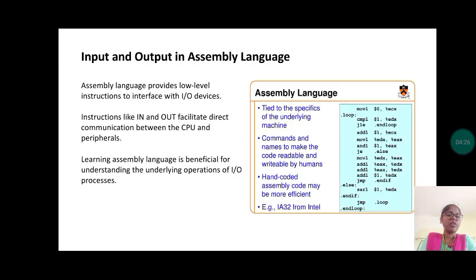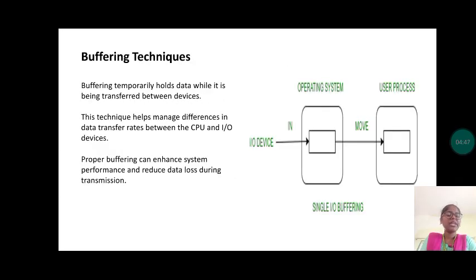Input and output in assembly language. Assembly language provides low-level instructions to interface with input output devices. Instructions like IN and OUT facilitate direct communication between the CPU and peripherals. Learning assembly language is beneficial for understanding the underlying operations of input output processes.